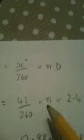Question 5 is an arc of a circle question. We are given an angle of 42 degrees and a radius of 1.2, but we need the diameter because the arc is part of the circumference, so we double the radius to get the diameter. Then the arc is given by the fraction of the circle multiplied by the circumference: 42 over 360 multiplied by pi D.